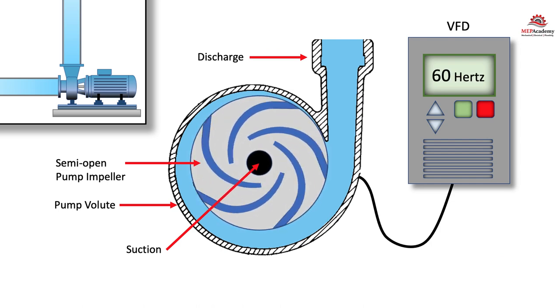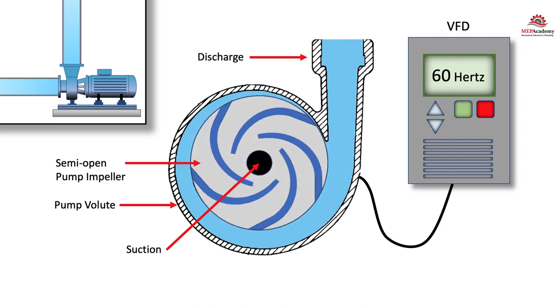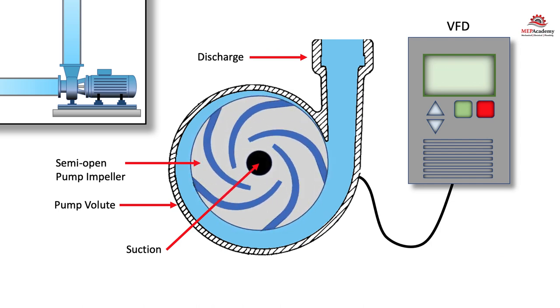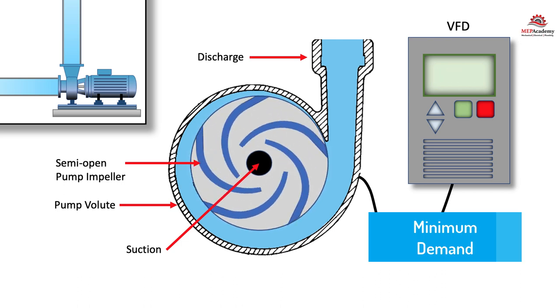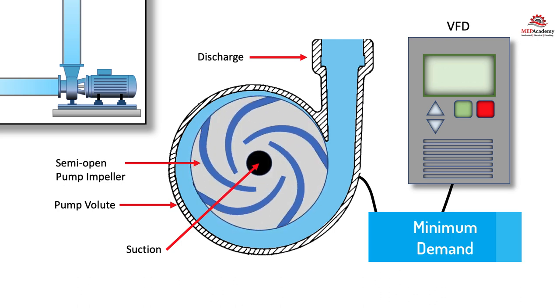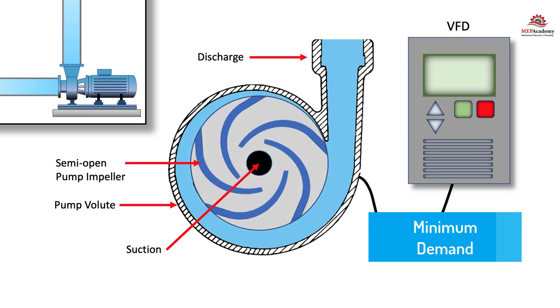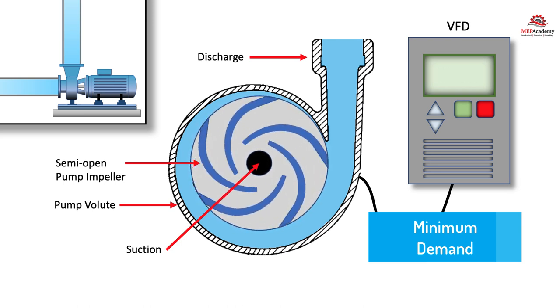And then as the demand falls off, as the system becomes cooler, the system will once again send a signal to the end suction pump motor to slow down. And then when the demand is dropped off at its lowest point, this impeller will spin at its lowest speed, whatever that setting may be, and you'll have the minimum flow of GPM.